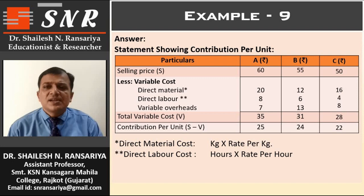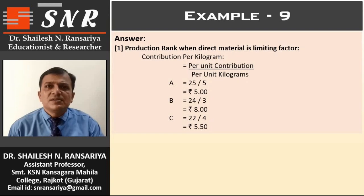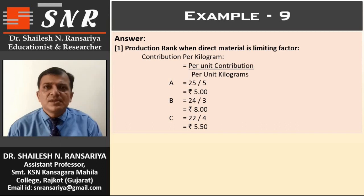After this, we calculate contribution as per the key factor. Point number 1: production rank when direct material is the limiting factor. Contribution per kg equals per unit contribution divided by per unit kg. For product A: 25 divided by 5 = Rs. 5. For product B: 24 divided by 3 = Rs. 8. For product C: 22 divided by 4 = Rs. 5.50.